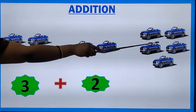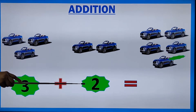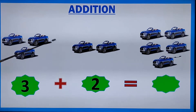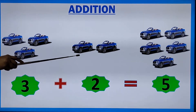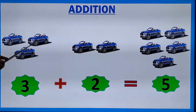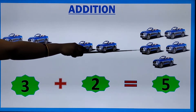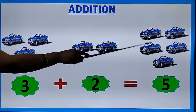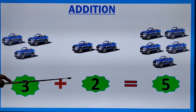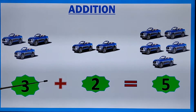Three cars plus two cars together make five cars. One, two, three, four, five. Three plus two is equal to five. The symbol of addition is plus.